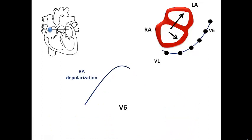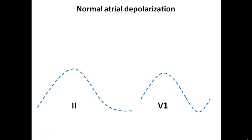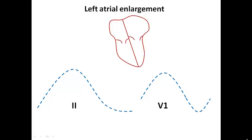Regarding V6, both right atrial and left atrial depolarization are directed near to the positive pole of V6, so we expect V6 to show a totally positive, monophasic P wave. To summarize normal atrial depolarization and P wave morphology, we use two simple ECG leads — lead 2 and lead V1. In lead 2, the P wave is positive and monophasic; in V1, it is biphasic. Now let's move to the abnormal conditions.